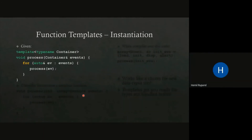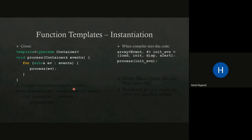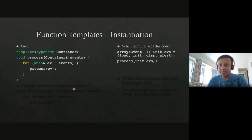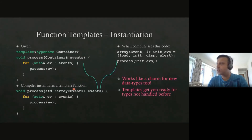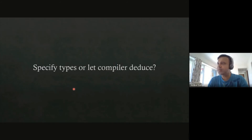To clarify: template functions are only instantiated at the point of use. So if you're taking a vector and a list but not using the list function, the list function will not get instantiated. You will always have one copy per used data type combination. We can specify the type explicitly or let the compiler deduce it.